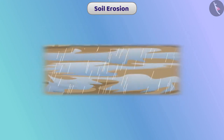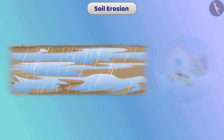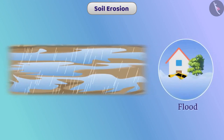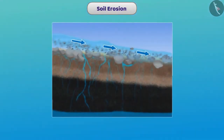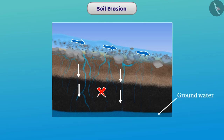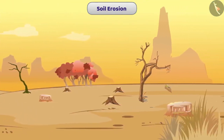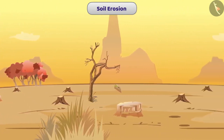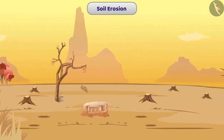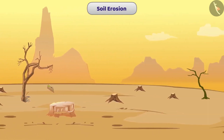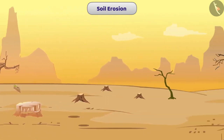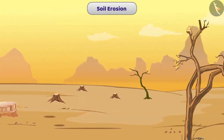Due to the absence of trees, rainwater flows away causing problems like floods. Water cannot enter into the ground, so groundwater is not replenished. Similarly, due to lack of trees, the environment changes and the habitat of organisms is also damaged, causing huge loss to forest and wildlife.